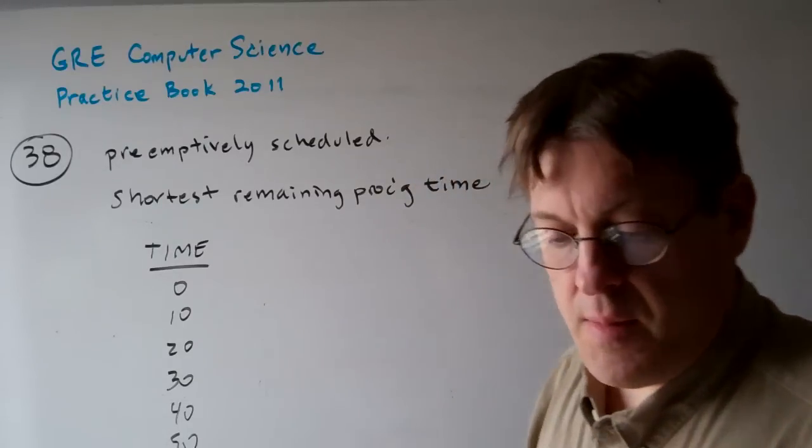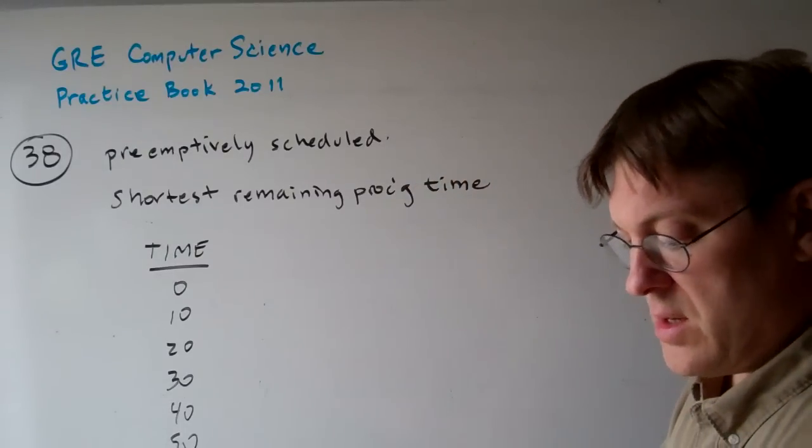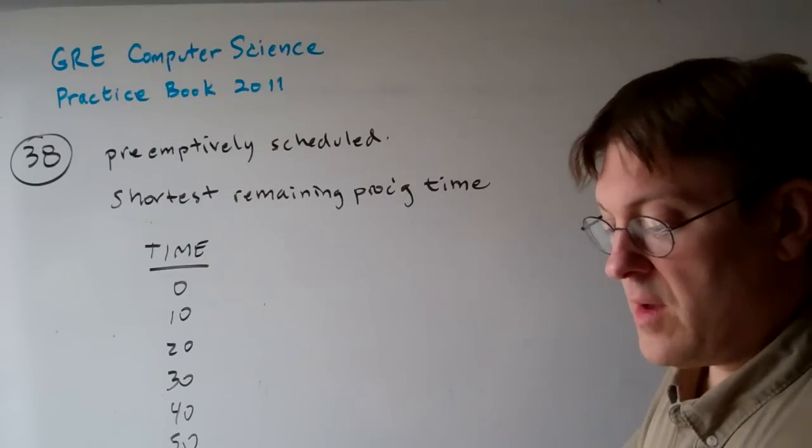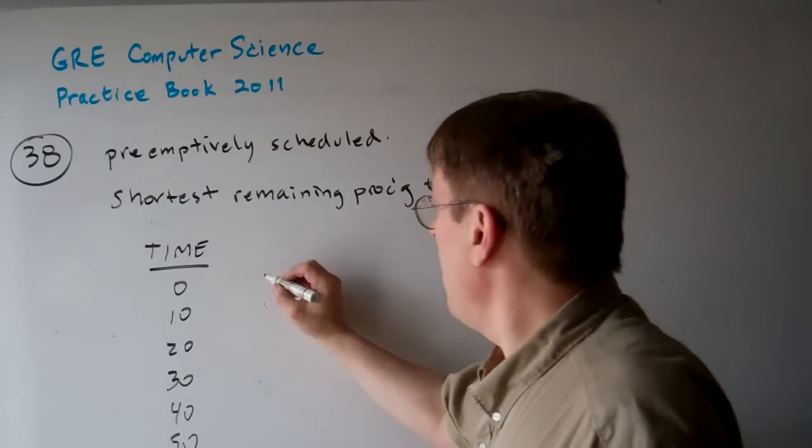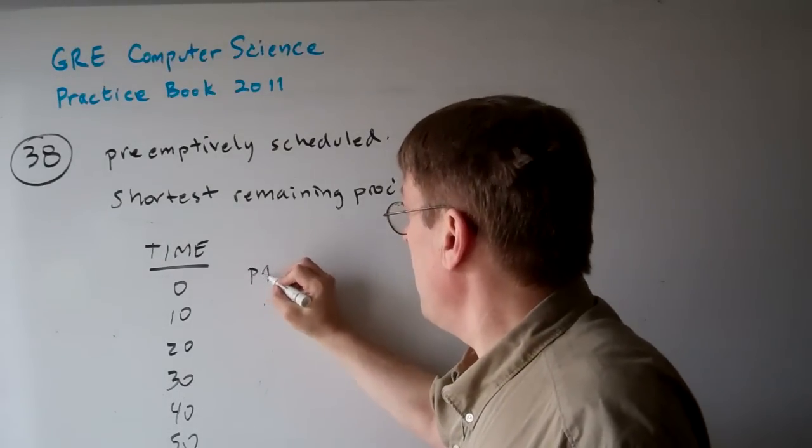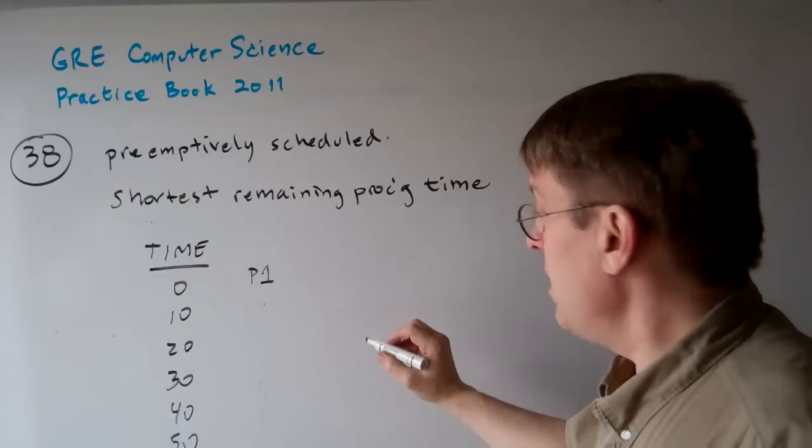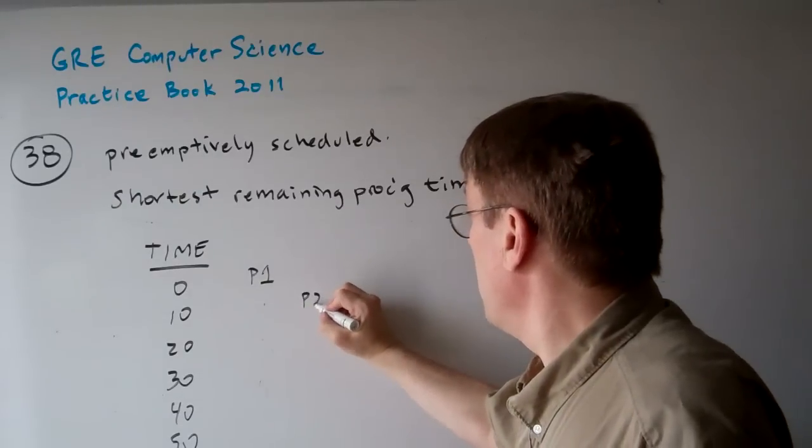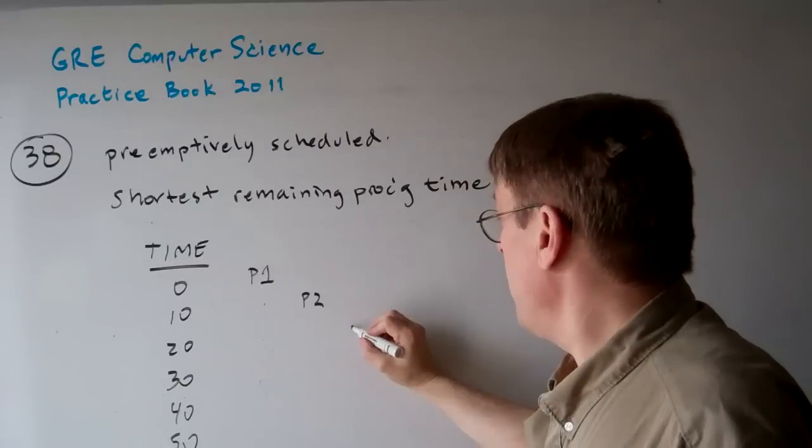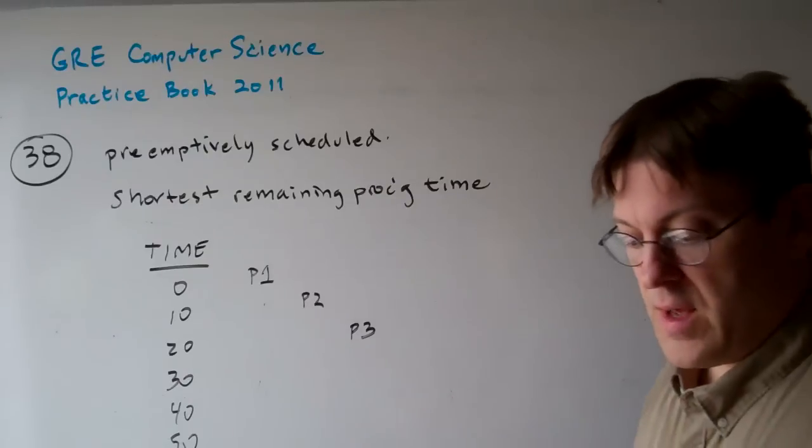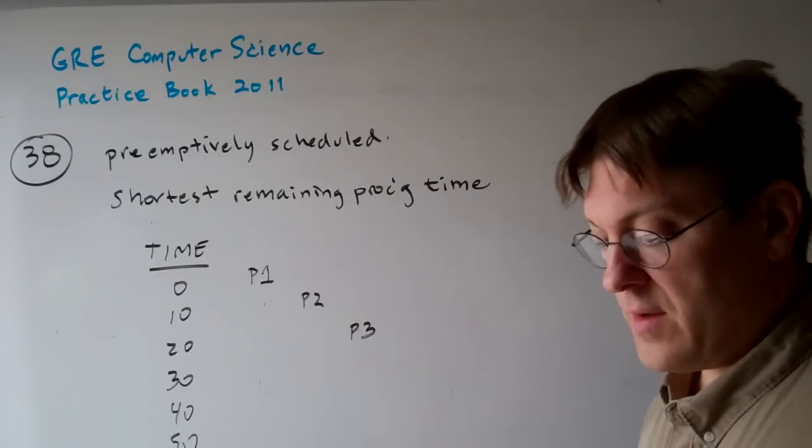Now in time 0, this thing here says processes P1, P2, arrival times 0 milliseconds, 10 milliseconds, and 20 milliseconds. So P1 is going to arrive right away, P2 is going to arrive after 10 milliseconds, and P3 is going to arrive after 20 milliseconds. So that's what's going to happen as far as time of arrival for these processes.